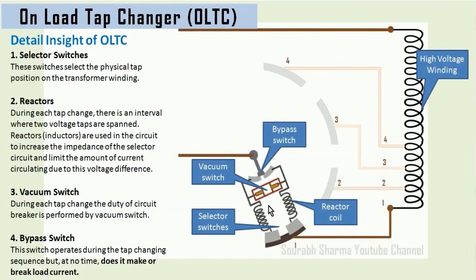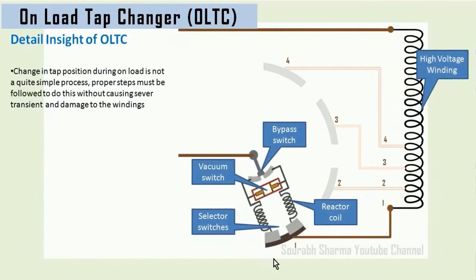The arm which rotates inside the OLTC is made of two parts. The front part is the selector arm, and the back part is known as the bypass switch. The selector arm is made in two parts — the left part and the right part. Both parts consist of a reactor coil, which is simply an inductor that opposes the sudden change in current. Both the left and right parts are connected through a vacuum switch. When the tap position needs to be changed, it must follow a proper sequence; otherwise it may cause heavy sparking and the transformer winding and terminals could get burnt.